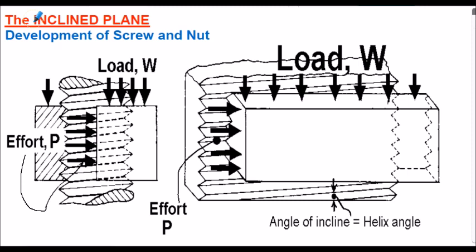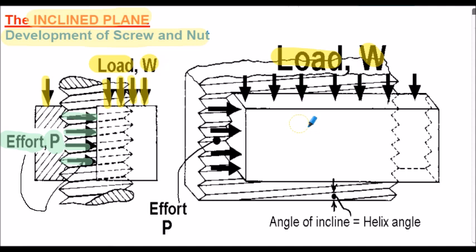Let's consider the inclined plane. Here's a diagram of the development of the screw and the nut. We have a load, labeled as symbol W, which is the load we're trying to raise, and the effort applied, symbol P — often symbol E is used for effort when considering simple machines — as the horizontally applied force. This is essentially the pushing force up the incline. The right-hand diagram shows more clearly the load applied to the inclined plane, with our thread unwrapped. Notice the angle of the incline is the helix angle of the thread.